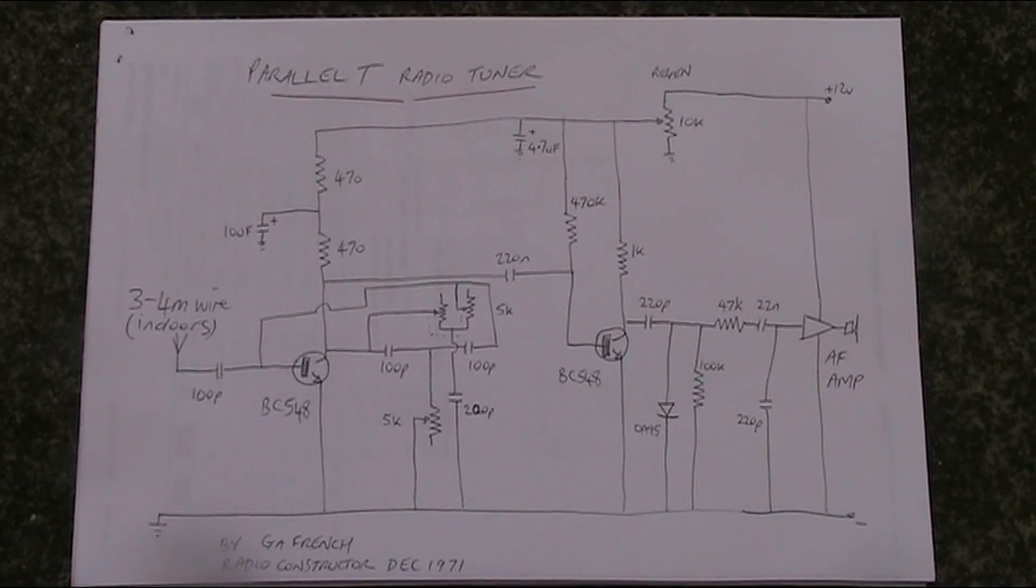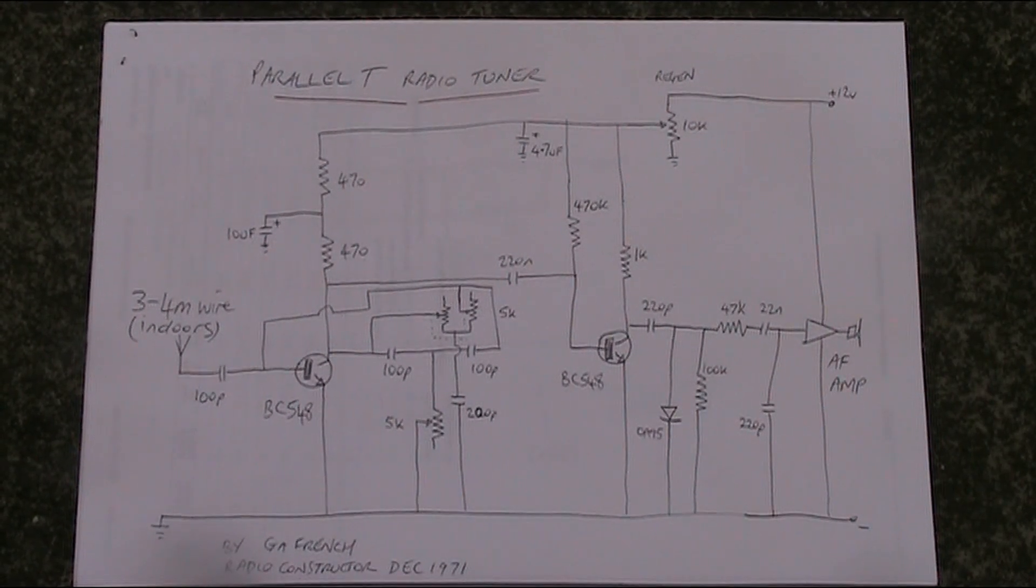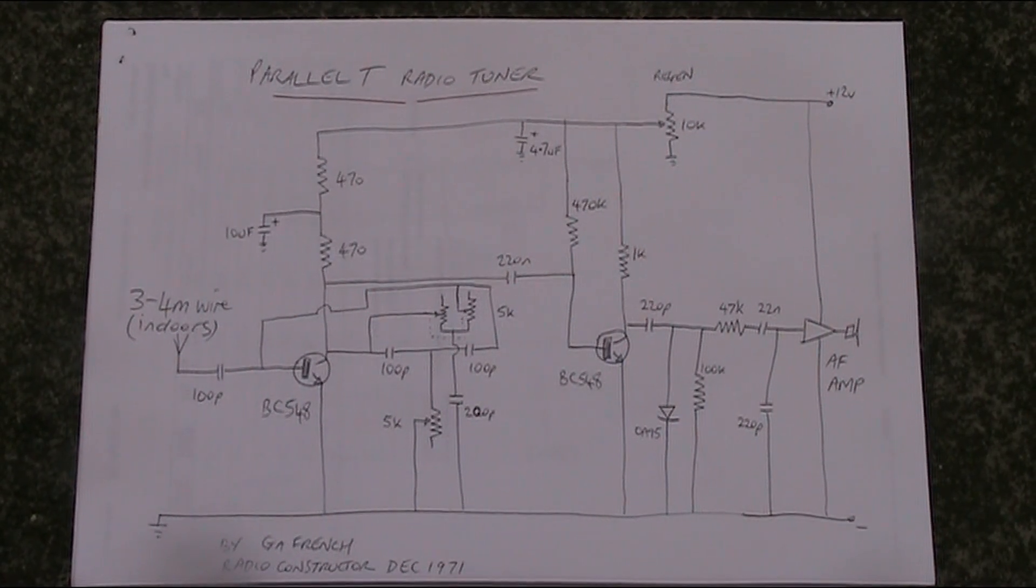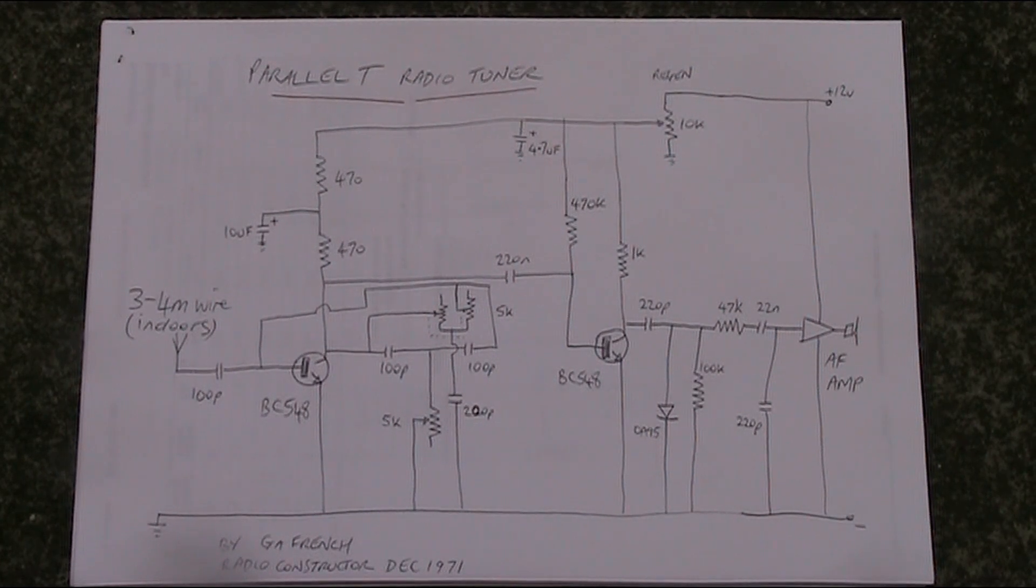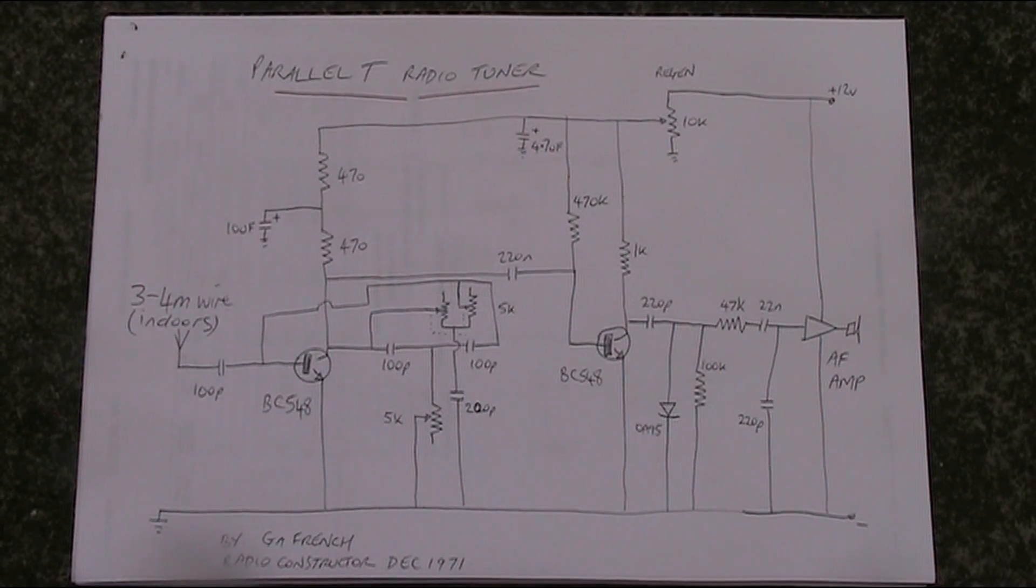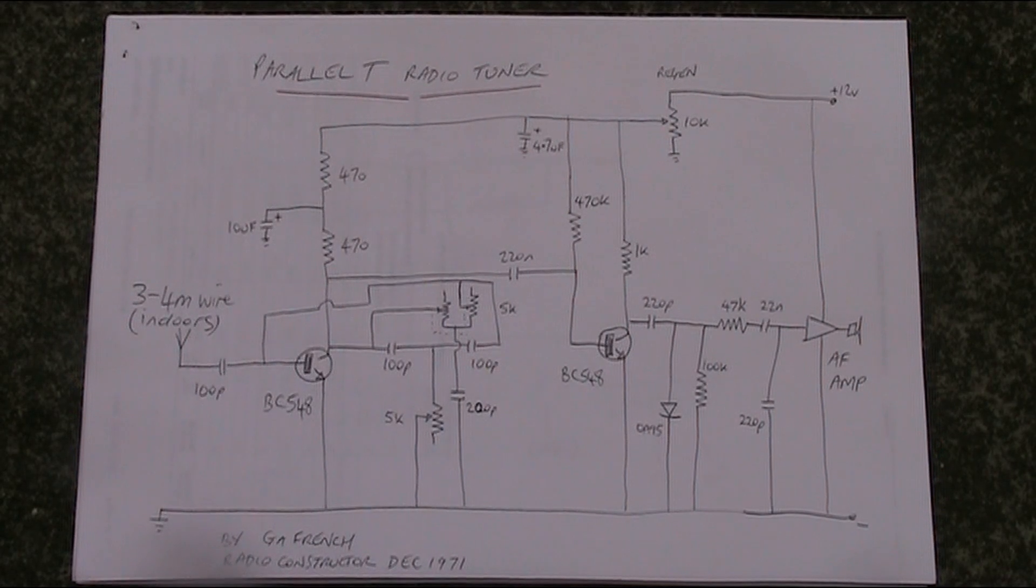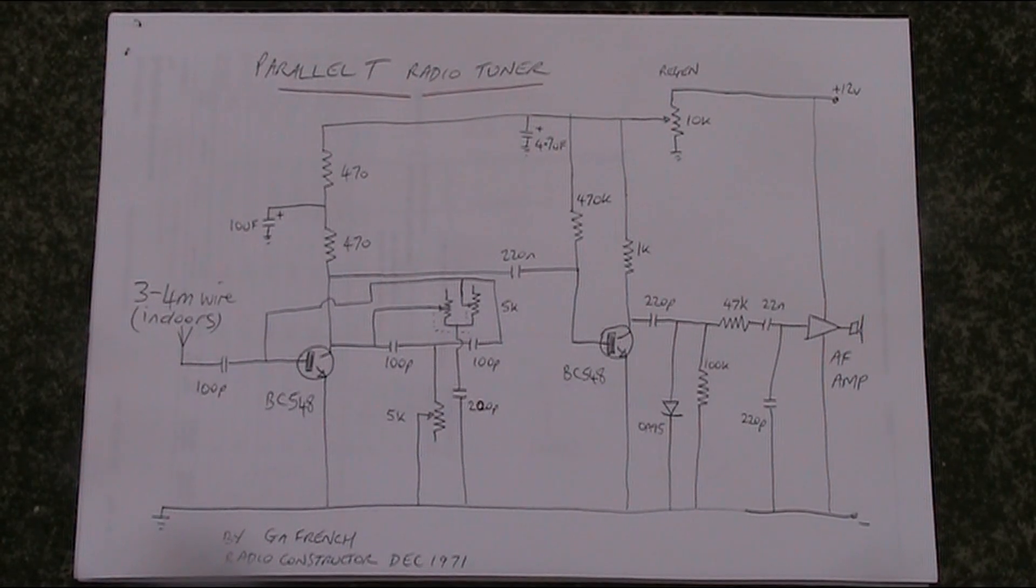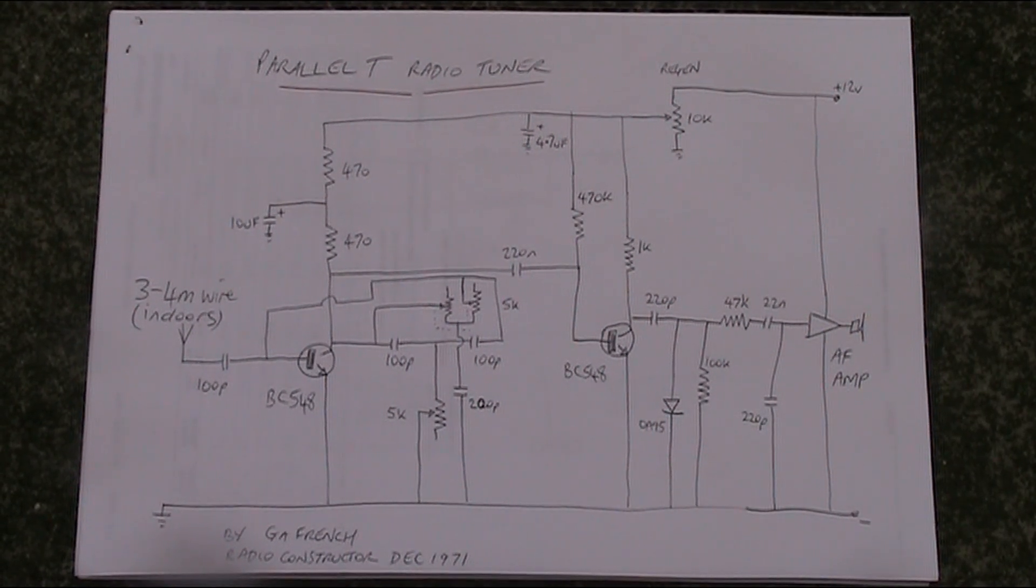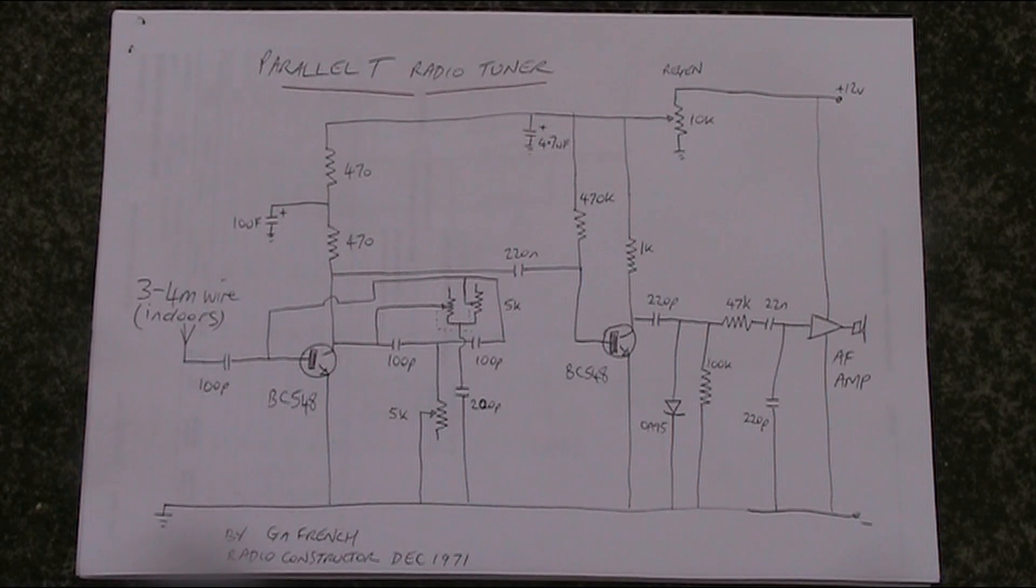50 or 60 years ago there was a UK magazine called The Radio Constructor. It published some very interesting circuits. One of which was by G.A. French in the December 1971 issue. This was a simple transistor receiver for 200 kilohertz, then a broadcast station. I think one of the BBC stations in the UK.